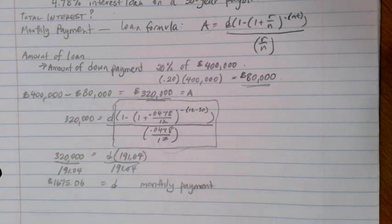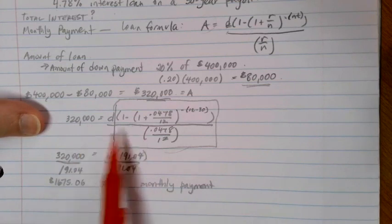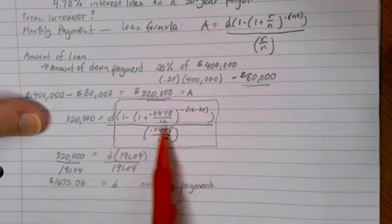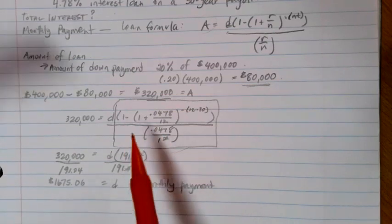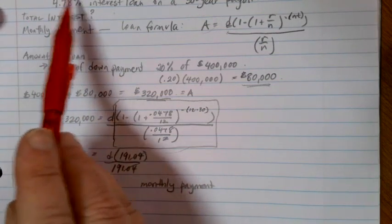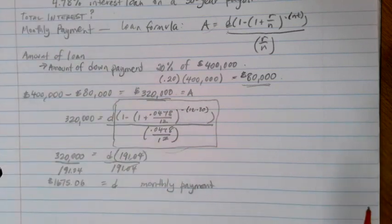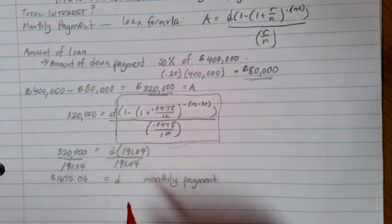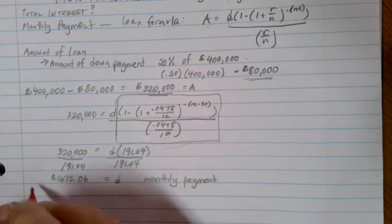Now the way that loans work is we're basically paying this amount every single month spread out over the 30 years. However, the amount of money that's going towards interest is going to be changing over time. The first month, you're going to be paying interest on the entire $320,000 of your loan. The interest gets paid first, and then we pay down the principal a little bit so that the next time we calculate interest, we're not going to be paying quite as much interest because our balance is lower. What that means altogether is that we can't just find 4.78% of this amount and spread it out evenly over the 30 years because that's not the way that it works.